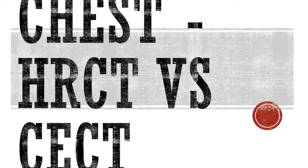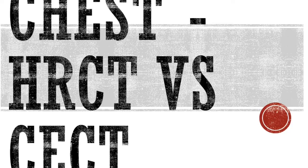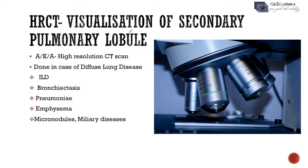HRCT scan means High Resolution CT scan. It is like a microscope — via the microscope we can visualize very small structures like bacteria and viruses. Similarly, in HRCT scan we can see very small areas of the lungs.